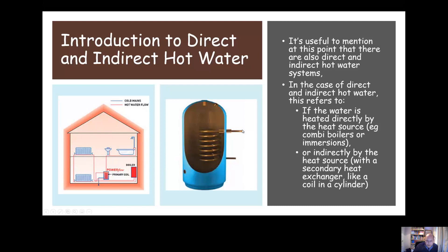An indirect hot water system has a secondary heat exchanger — a coil inside the cylinder. The boiler heats water which circulates through the coil and returns to the boiler; the heated water in the coil then heats the water in the cylinder. So the water is heated indirectly — the water from the heat source never actually comes out of our taps. We don't want to confuse direct and indirect cold water with direct and indirect hot water.